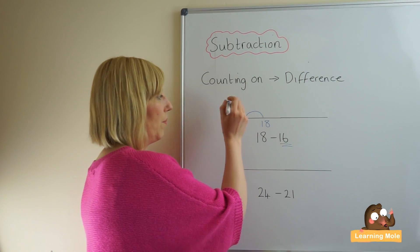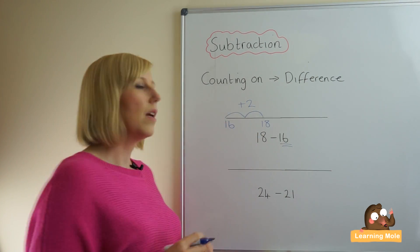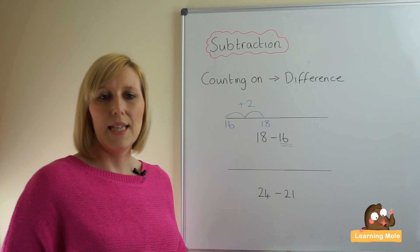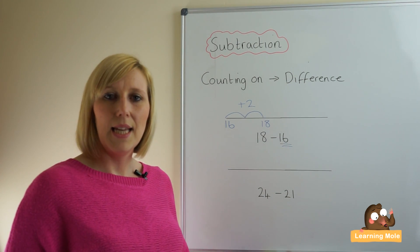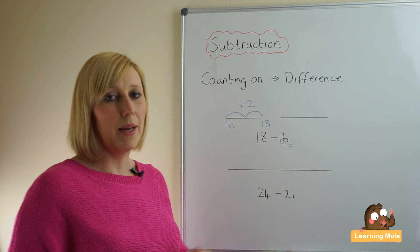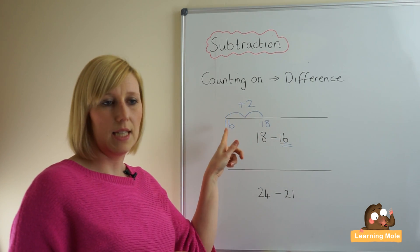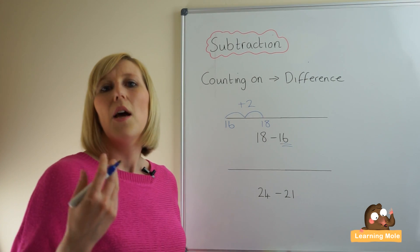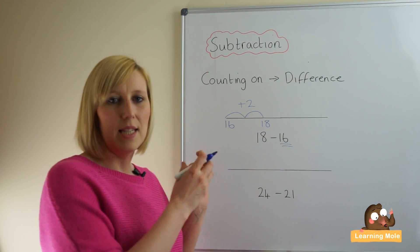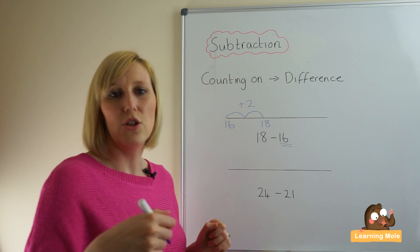So now we know that 18 take away 16 is 2. We can double check by counting backwards: 18, 17, 16. And as you can see, counting on is perfect in this scenario because you're just doing two jumps and it's a very quick and efficient calculation.